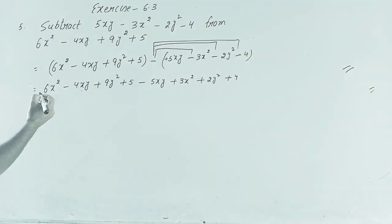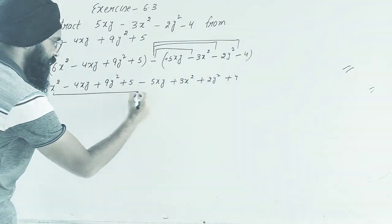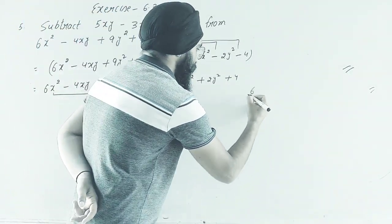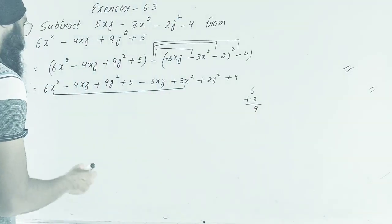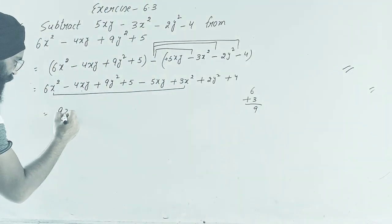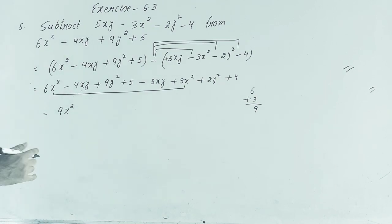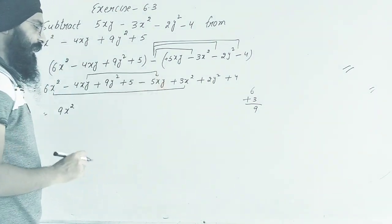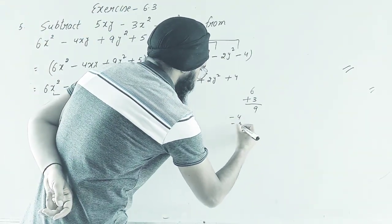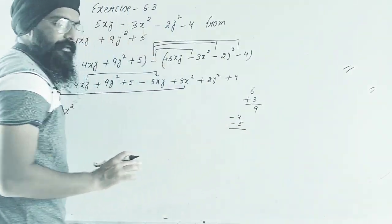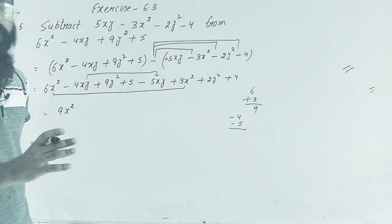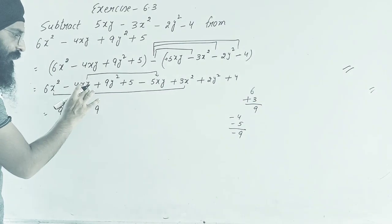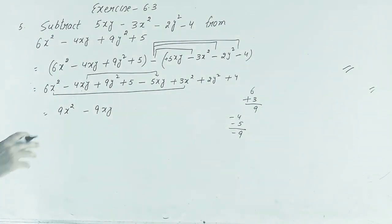Now we collect like terms. For x square: 6x square and 3x square, 6 plus 3 gives 9x square. For xy: minus 4xy and minus 5xy, minus 4 minus 5 gives minus 9xy.